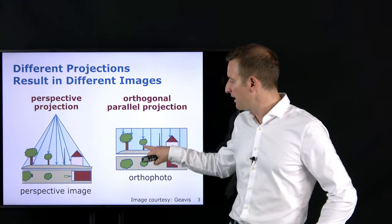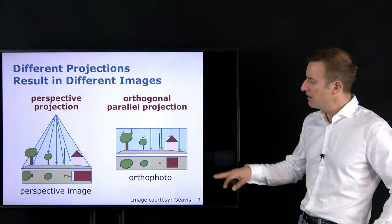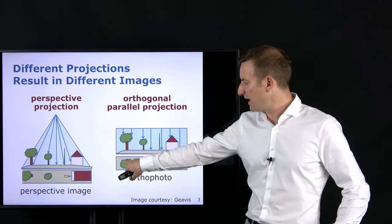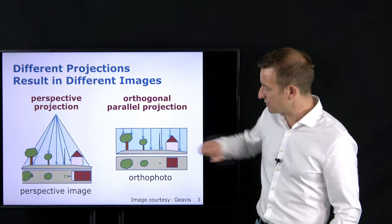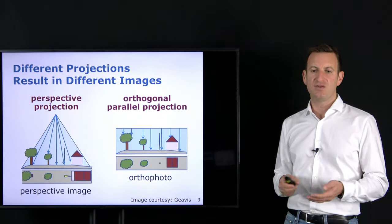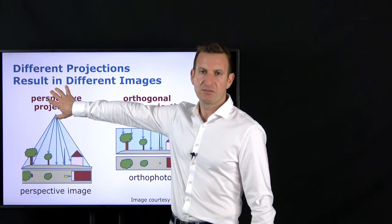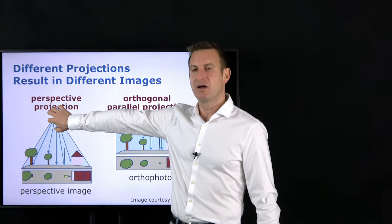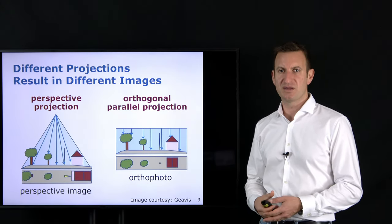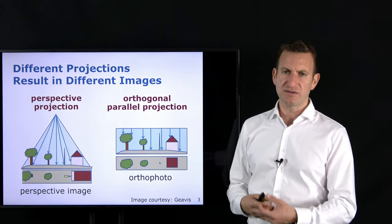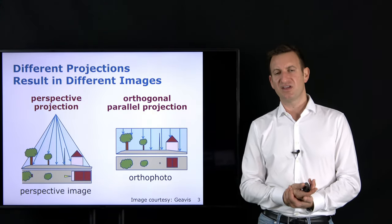We want to have this type of image so we can actually perform measurements and say, for example, this tree is as large as that house. In this lecture, we will discuss how we can start from a regular camera image recorded with a perspective projection and turn it into an orthophoto. This requires not only image information but also knowledge about the 3D structure of the world.